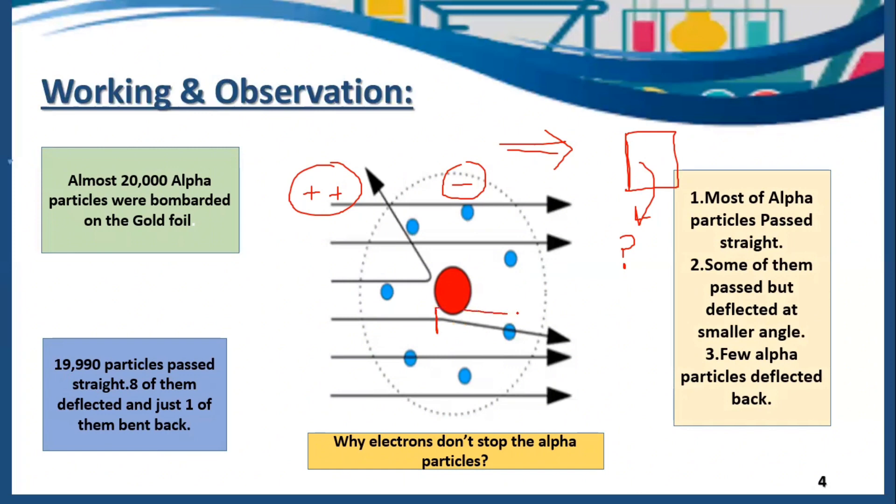The next question arises: why did some alpha particles deflect? Some alpha particles deflected because inside the nucleus we have protons. The alpha particles are also doubly positive charged. When these alpha particles with positive charge passed through the nucleus which has protons in it, they got deflected at a very small angle due to repulsion.